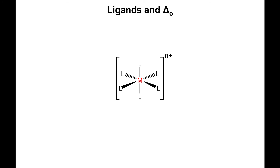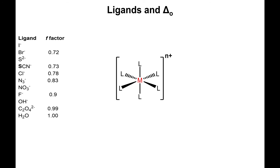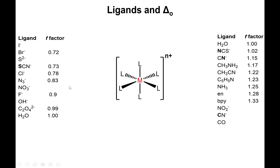Water is the reference compound, but you can have any other ligand. When all six ligands are the same, these are called homoleptic complexes. You can take the reference value of the hexa aqua complex and recalibrate it using an f factor for the ligand you have. For example, a bromide ligand has an f factor of 0.72, and six azide ligands give an f factor of 0.83.